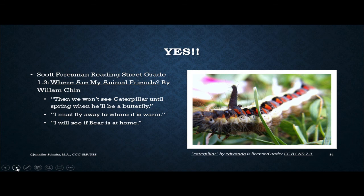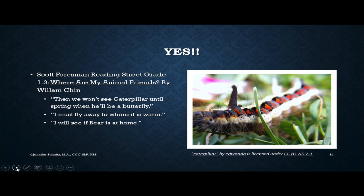Let's look at some textbooks. This comes from the Reading Street textbook for early grade one — a story called 'Where Are My Animal Friends?' by William Chin. Here are some sentences a first grader is expected to read and understand: 'Then we won't see Caterpillar until spring, when he'll be a butterfly' — that's a relative clause telling us more about spring. 'I must fly away to where it is warm' — that's an object complement clause telling us where they're flying. 'I will see if Bear is at home' — that is an adverbial clause. So this is first grade reading material.